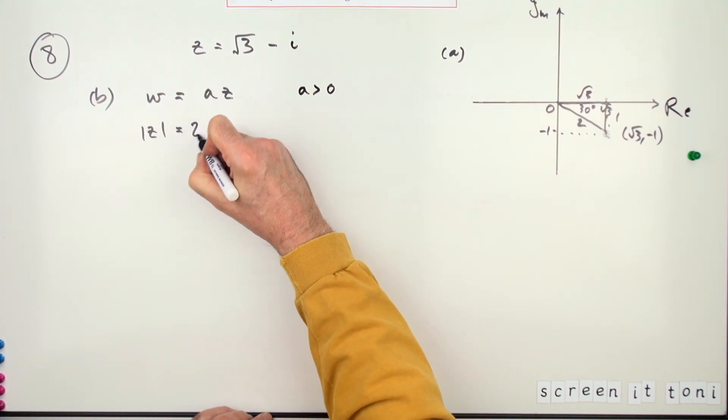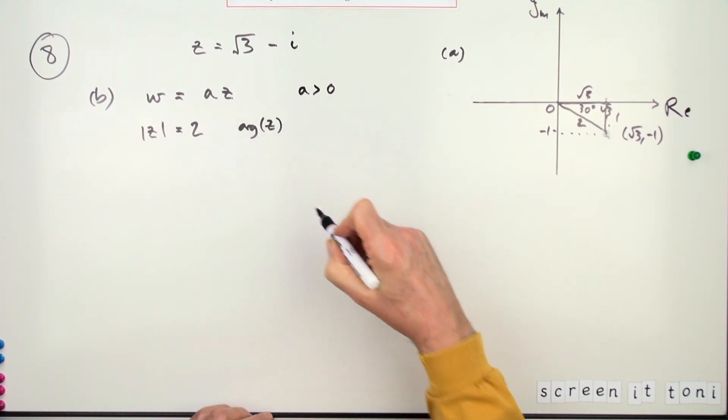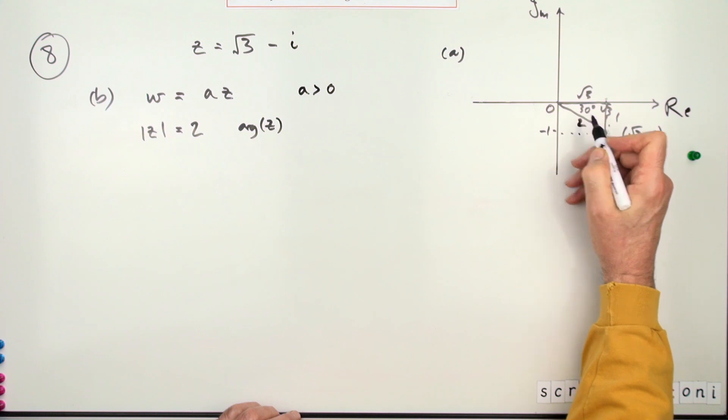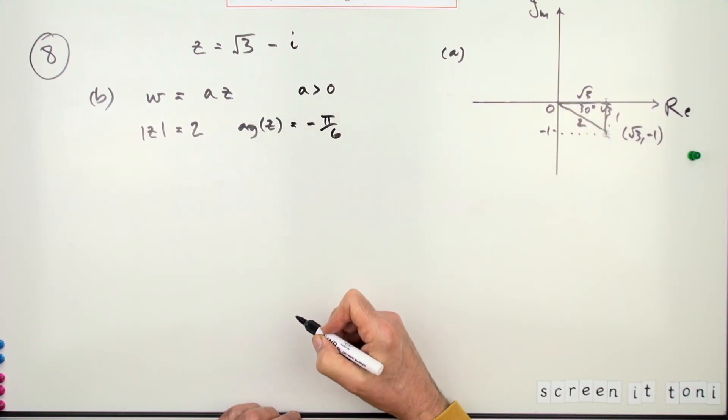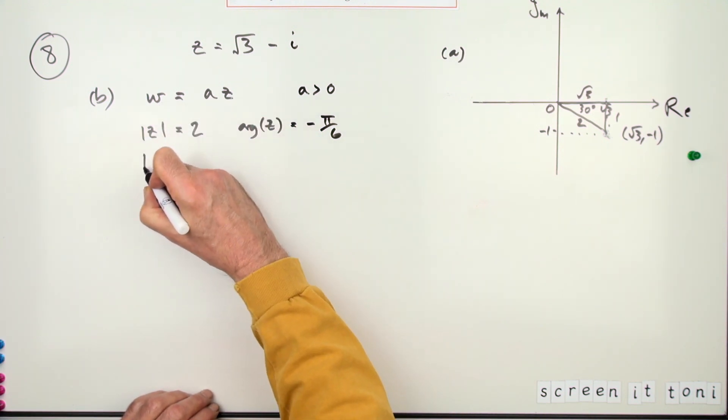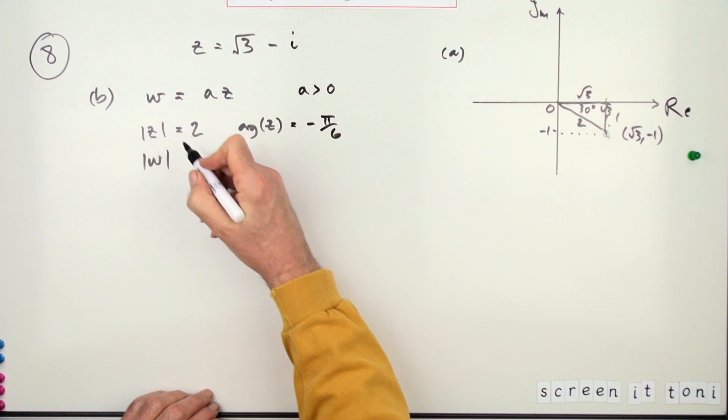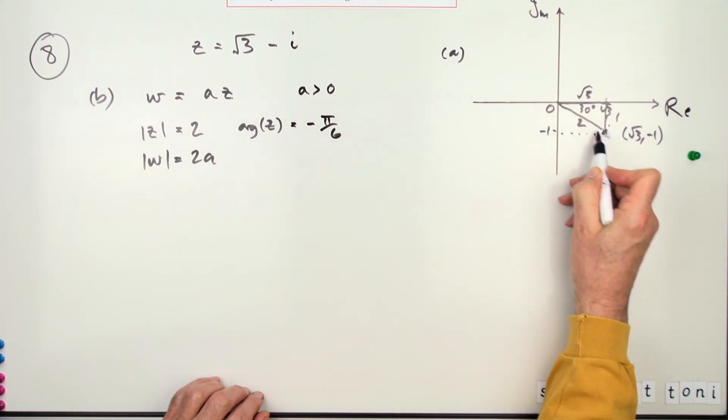The modulus of z is two, and the argument of z is... that's a negative 30, but I think I'll write that as a negative π upon six. Which means the length of this is just a times it. So the modulus of w will be 2a, but its argument will be exactly the same, because all you've done is moved out in the same direction for a times the distance.